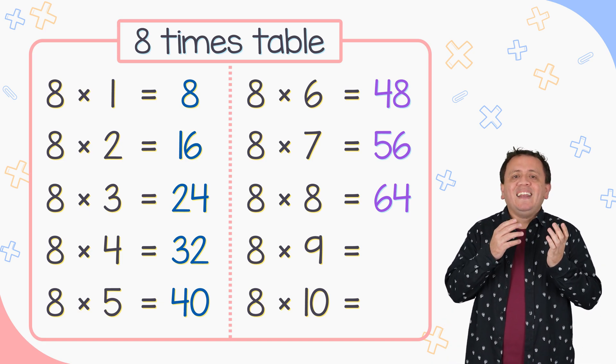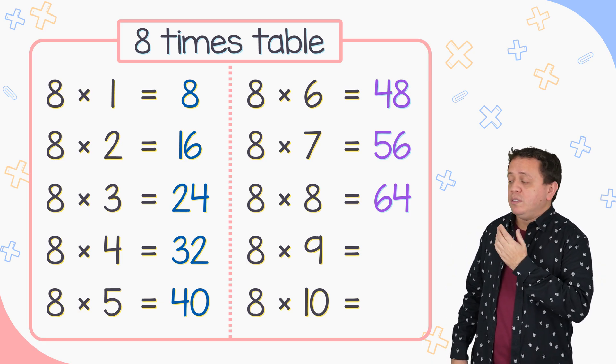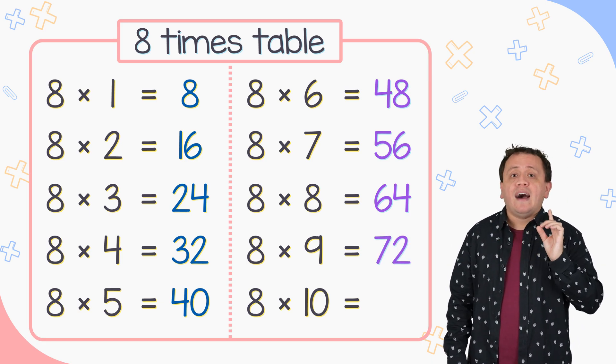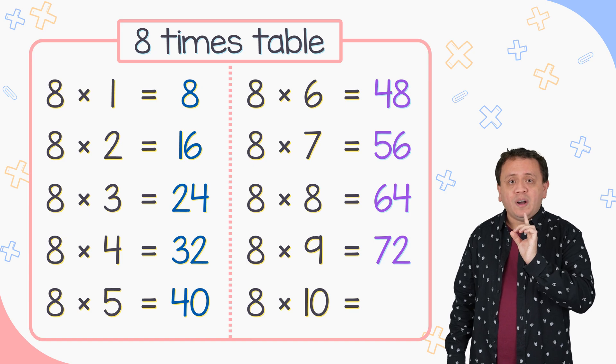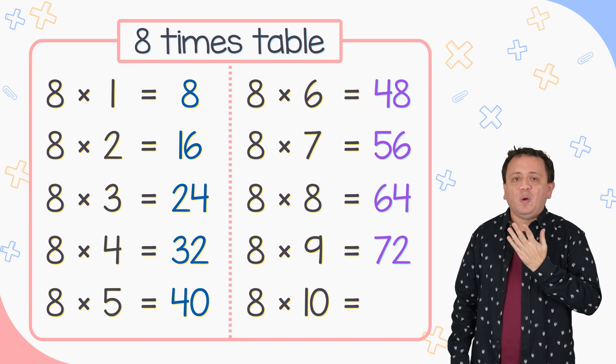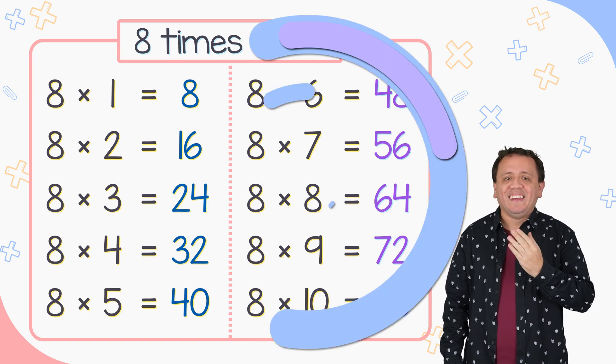8 times 9 is equal to 72. And the last one, 8 times 10 equals 80.